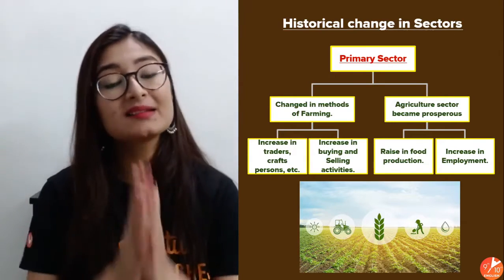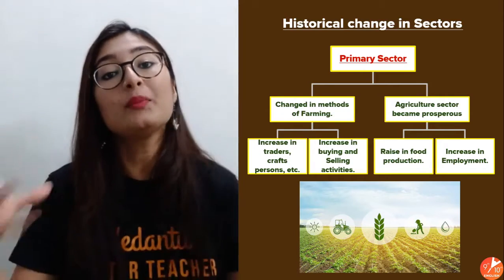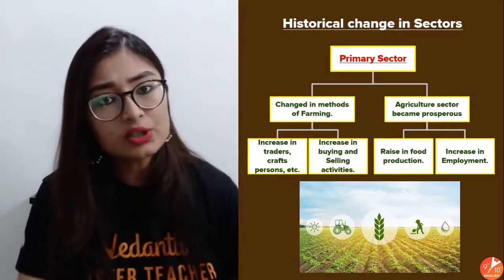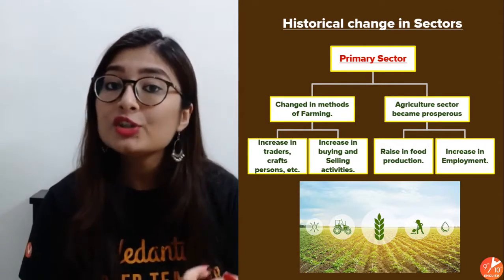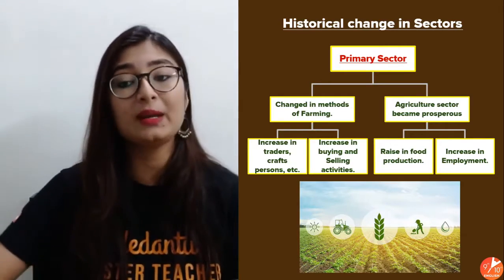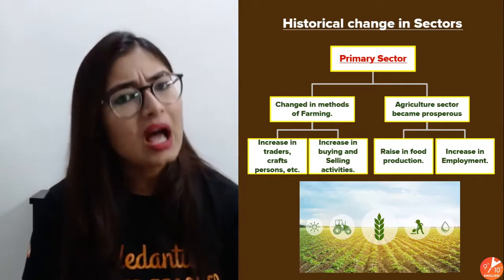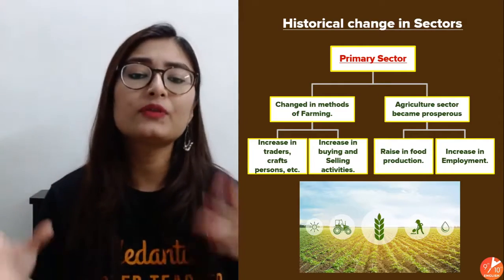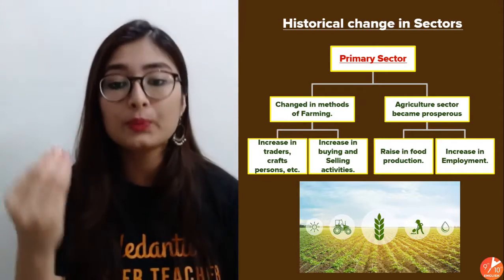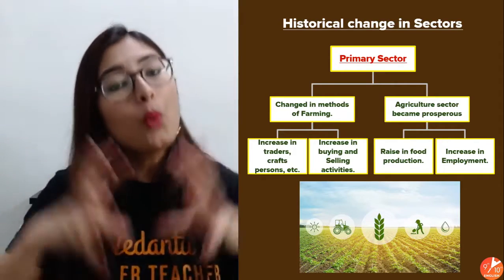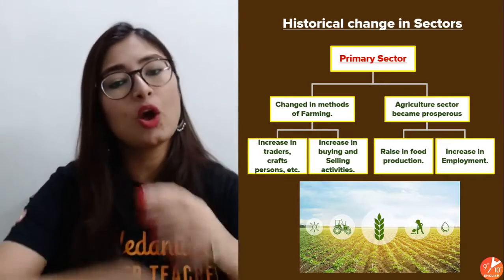As a result of this, people involved in the sector got more employment and the sector became more prosperous — more and more production started happening. Before the 1960s, before the Green Revolution, production was not enough. After the Green Revolution, production increased, making farmers more prosperous. With more technology, more people were needed to work on the fields, increasing employment and food production. At the same time, the increase in traders and craft persons led to more buying and selling — a cycle of growth that is interdependent and goes on together.